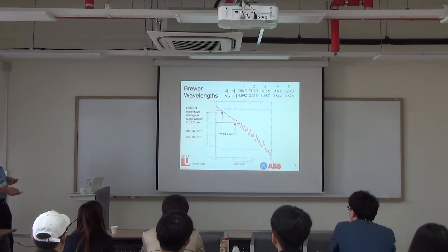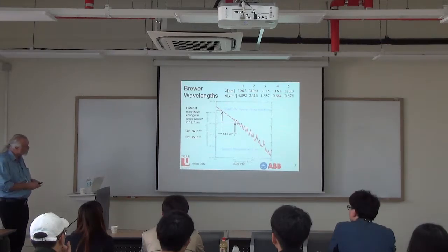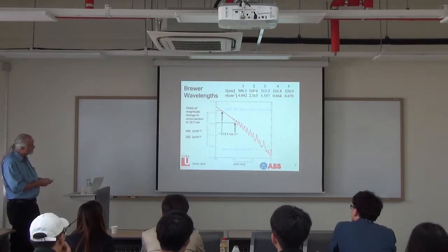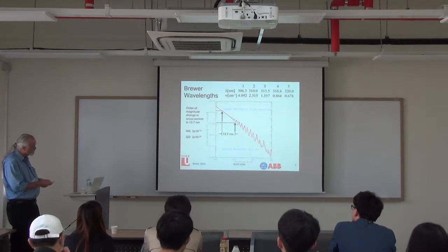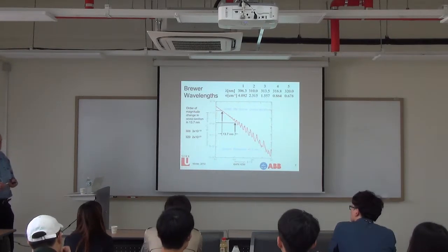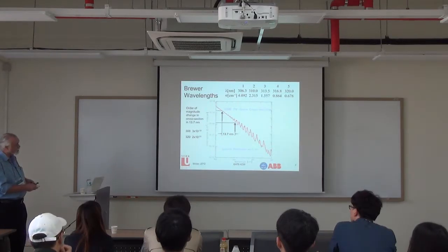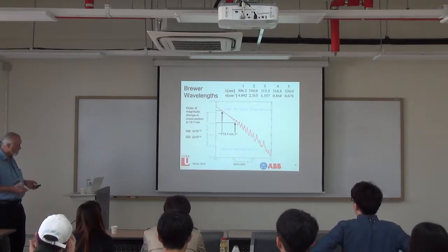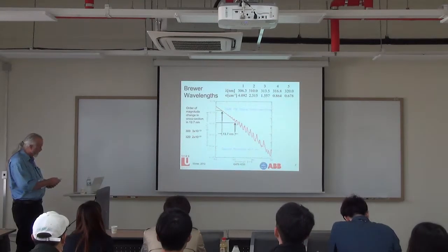The ozone absorption cross-section changes roughly exponentially as a function of wavelength—on a logarithm scale you see nearly an order of magnitude change over just the short wavelength range used for measuring ozone. This presents an advantage—high sensitivity to ozone from the intensity difference at two wavelengths—but also means you don't want any light coming in from longer wavelengths where the cross-section is much smaller and the signal is huge, because it will swamp the true short-wavelength signal.